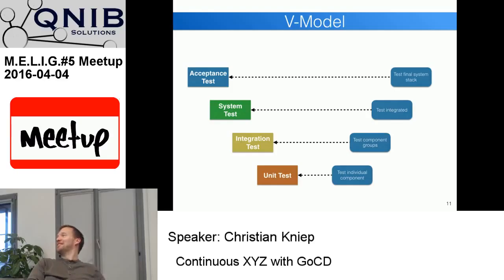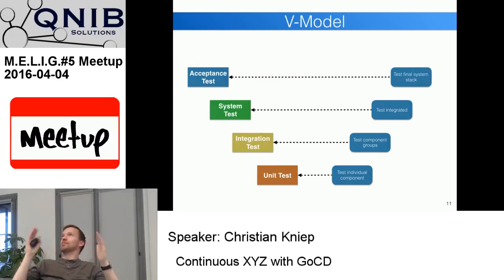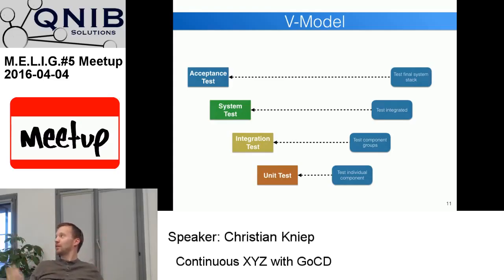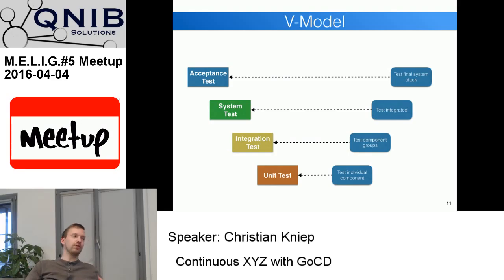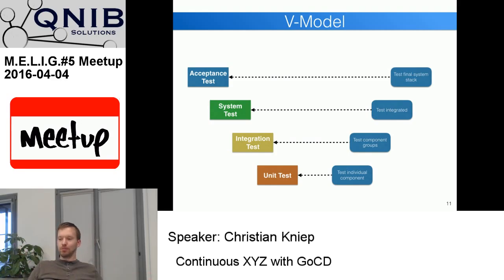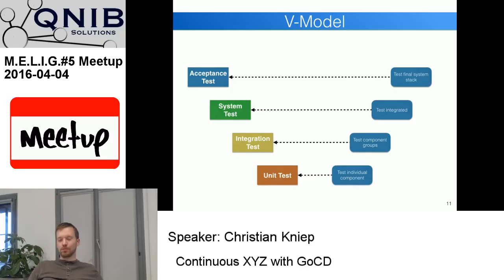Continuous deployment is just another automation step where after the release is cut, the deployment is also automatic. For instance, a Docker image is built, agents detect the new image, download it, restart the service — rolling update or whatever you need.